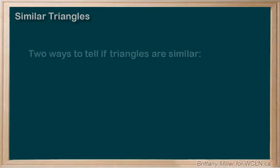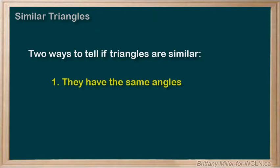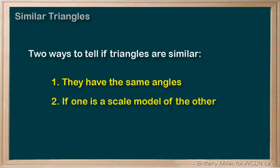So, there are two ways to determine if triangles are similar. One, if all of the angles are the same. And two, if one is a scale model of the other and all of the sides have been multiplied by the same factor.